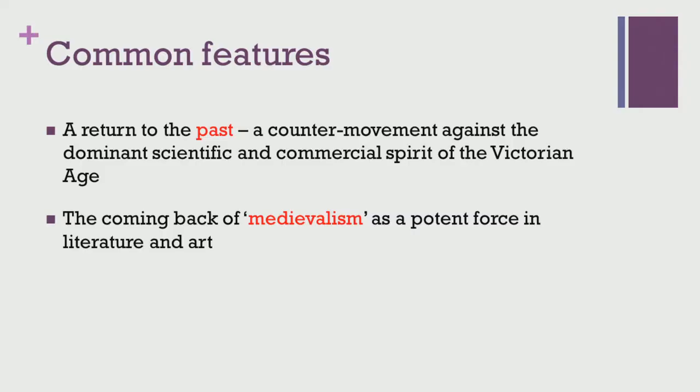Though the Victorian poets were not really similar to one another, they do display a lot of unique features in their personality as well as in the kind of writings that they produced. We notice some striking similarities which make them identifiable as Victorian poets, informed by the Victorian temper and the sensibilities of the time. One significant feature is the return to the past, which may also be seen as a counter movement against the dominant scientific and commercial spirit of the Victorian age.